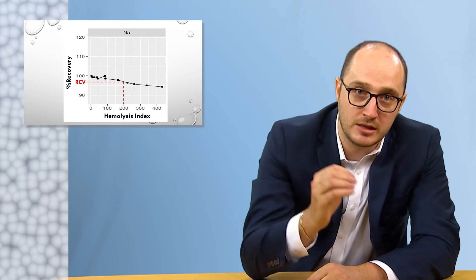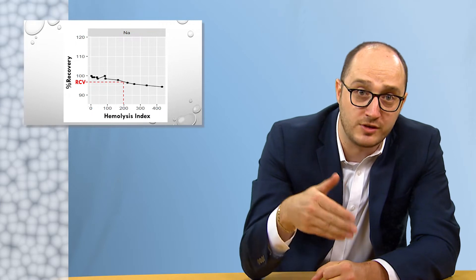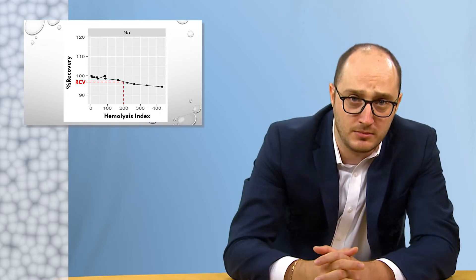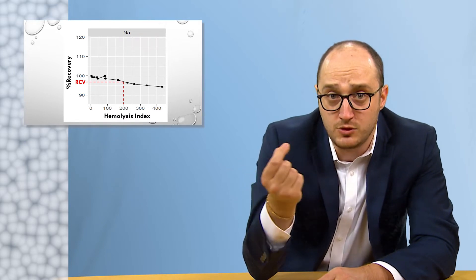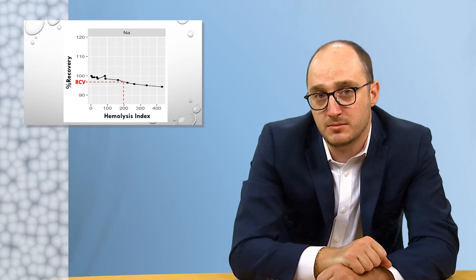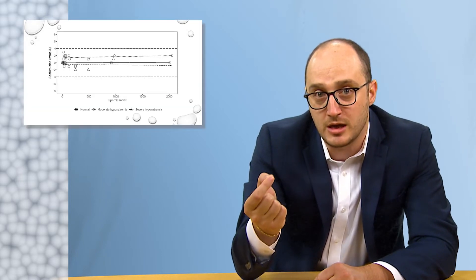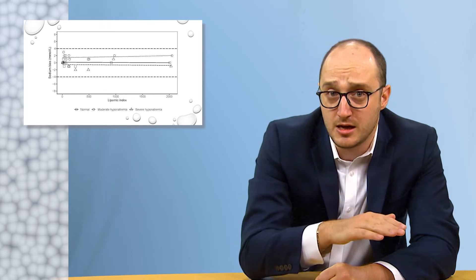For lipemia, our recently published data also shows that current product inserts are overstating the tolerance for interference because they define their lipemia thresholds by performing spiking experiments using intralipid — a soybean oil, egg yolk phospholipids, glycerin, and water emulsion — instead of using human samples containing high levels of endogenous lipids. We recreated the experiments vendors typically perform with intralipid using three different concentrations of plasma sodium and saw no effect up to the highest L-index tested, which is 2,000 on Roche. And then we evaluated human samples with endogenous lipemia by direct and indirect methods and saw a significant difference when the lipemia index exceeded around 700. Not a single sample with L-index over a thousand was within plus or minus 4 millimoles per liter.